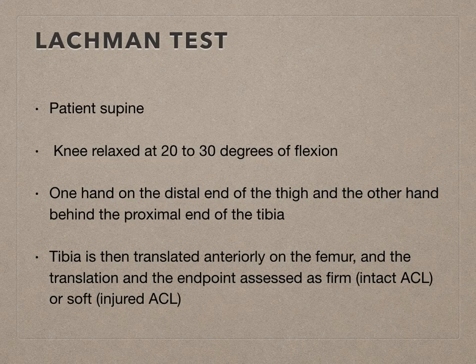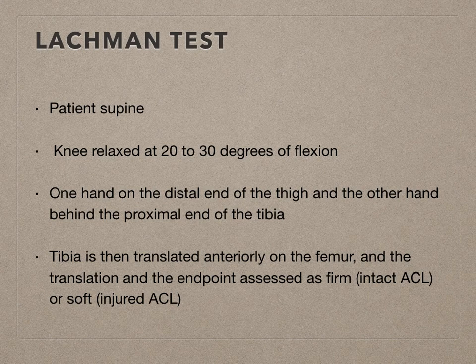How is the Lachman test performed? The patient is kept supine, the knee is relaxed at 20 to 30 degrees of flexion, one hand is kept on the distal end of the thigh stabilizing the thigh, and the other hand behind the proximal end of the tibia. The tibia is then translated anteriorly on the femur and the translation and the endpoint is assessed as firm or soft.